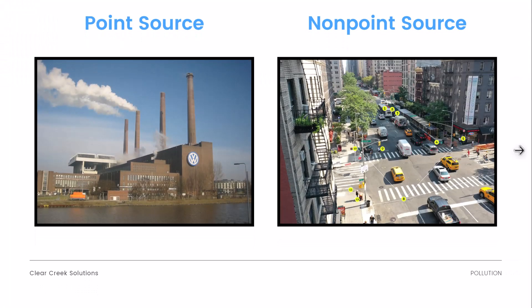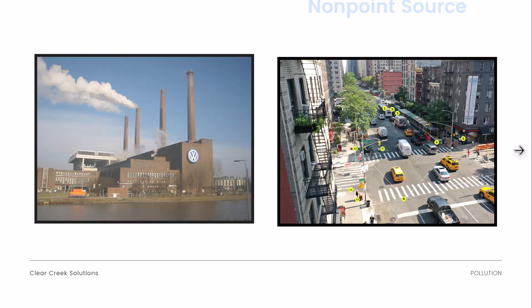Here are some examples. On the left we have a point source — a factory. It's very clear; we have toxins being released into the air and we know where it's coming from. But the non-point source is this roadway. Where could the different toxins and pollutants be coming from? There are a lot of different sources and it's hard to identify how much each one is exactly contributing to the problem.